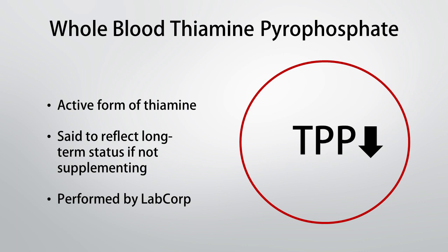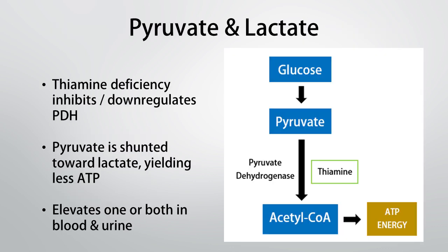The next blood measurement is whole blood thiamine pyrophosphate — the active form of thiamine. When we absorb thiamine and get it into cells, we activate it. This is a relatively new marker but research indicates it's quite a good marker for total body status, likely reflecting long-term status rather than recent dietary intake. This test is available at LabCorp. I don't run it that often personally, and I have found that some people with normal levels still benefit from thiamine supplementation.